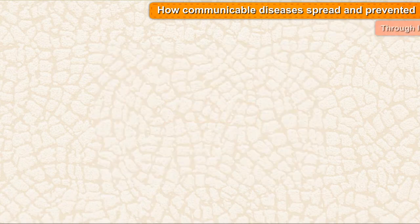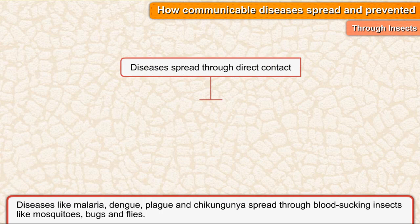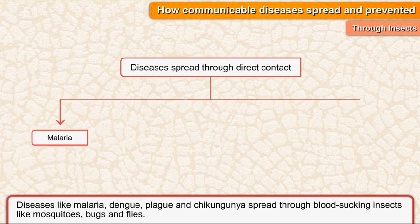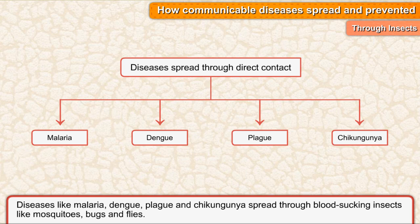Through insects: Diseases like malaria, dengue, plague, and chikungunya spread through blood-sucking insects like mosquitoes, bugs, and flies.